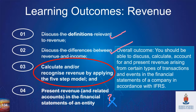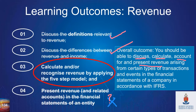Just to recap our overall objectives: we want to be able to discuss, calculate, and then account for any revenue that arises. The journal entries are not super difficult — it's either revenue received in advance or revenue. The important thing is understanding why — that's the discussion piece.